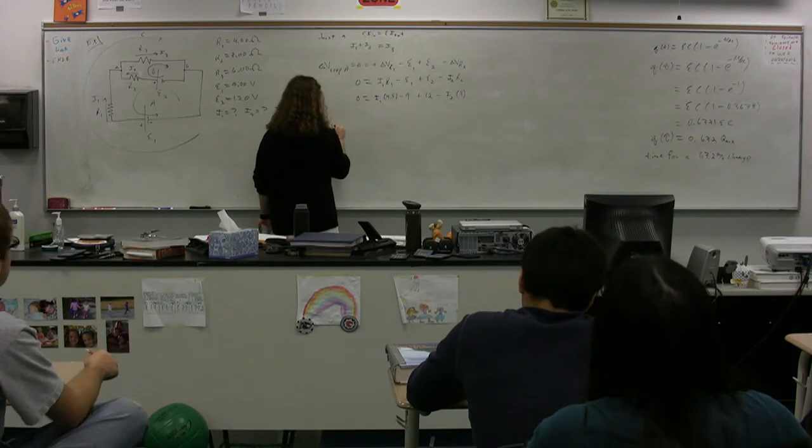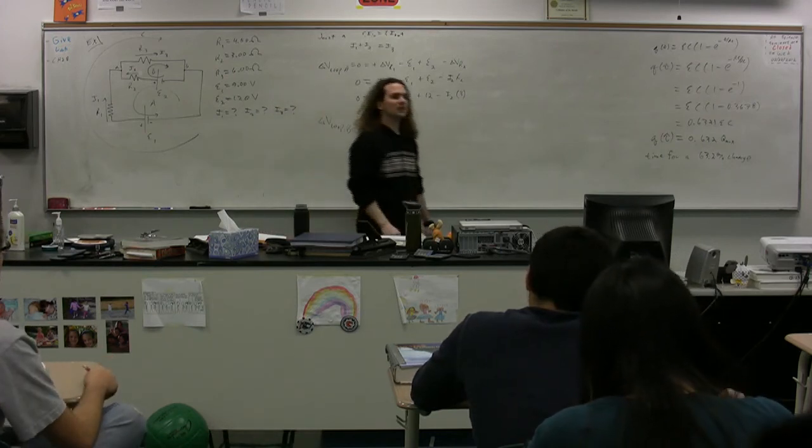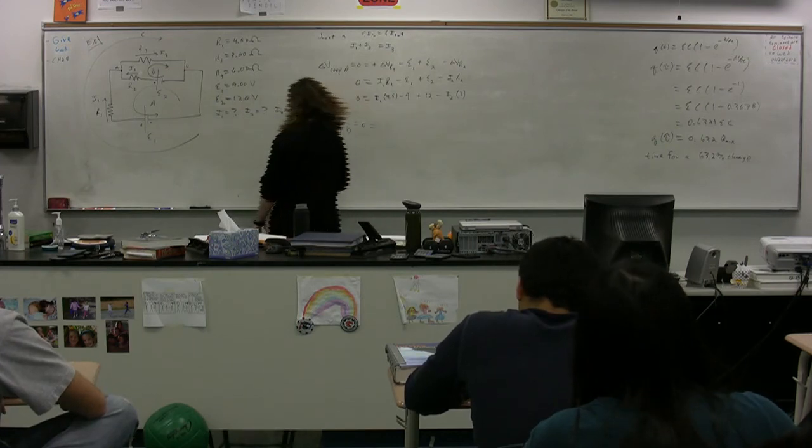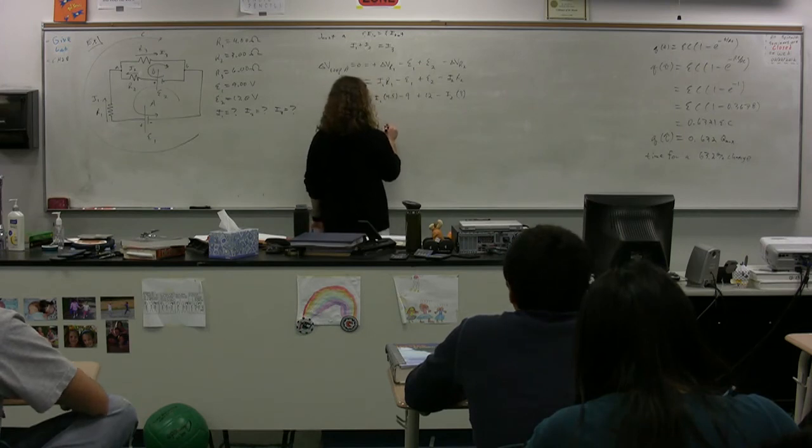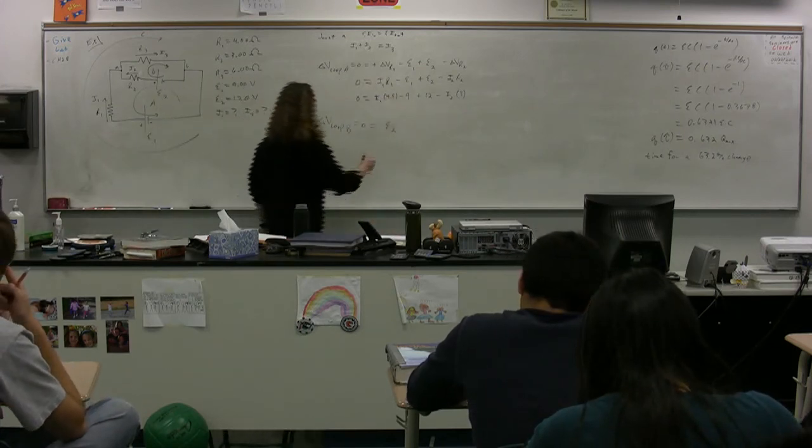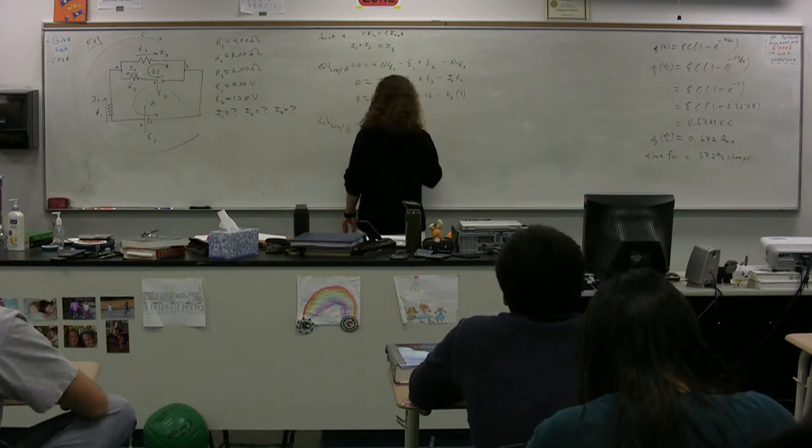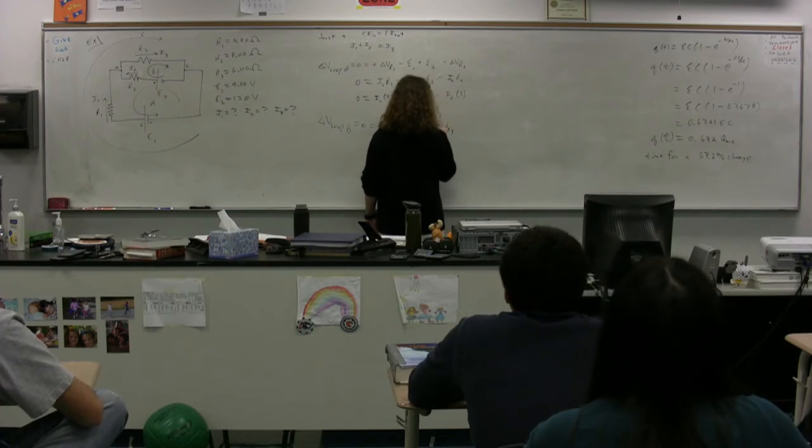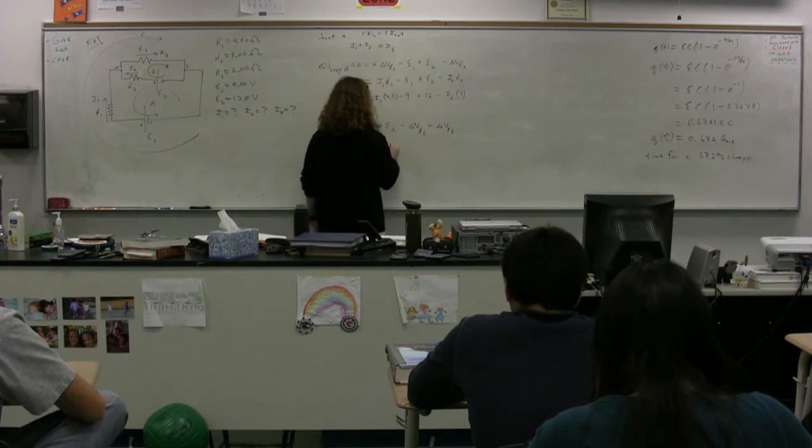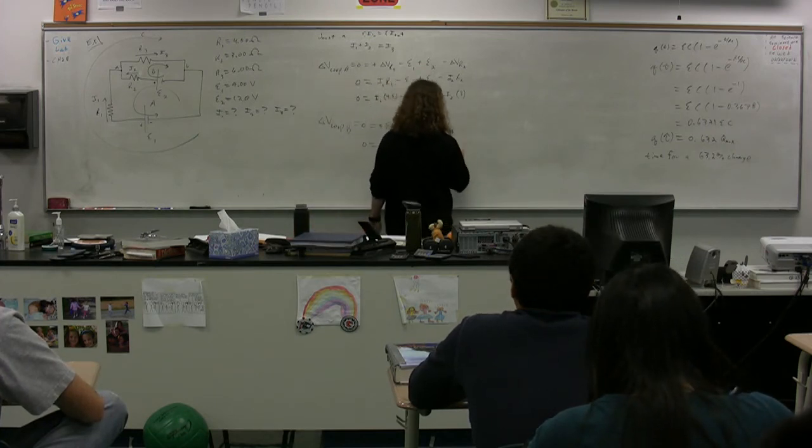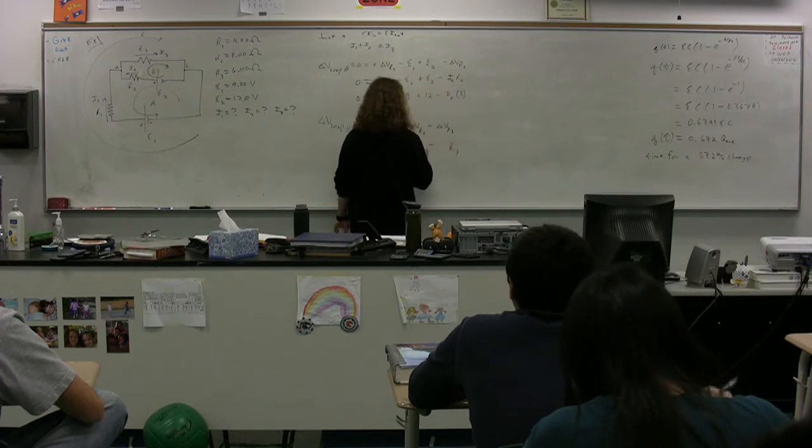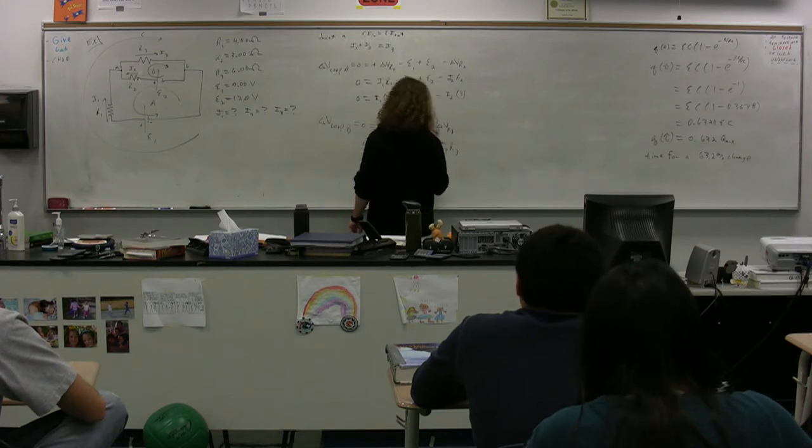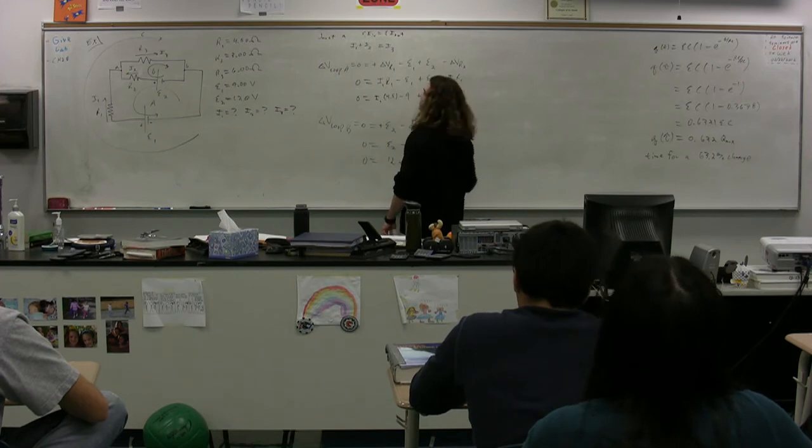We need the potential difference across loop B, which is equal to 0. It's going to be equal to... Bill, walk me through this one, please. So it's equal to 0. Loop B? You have the EMF 2, and that's going to be positive. And then you have the potential difference of resistor 2, and that's going to be negative. And then you have the potential difference of resistor 3, and that's going to be negative. Good. 0 equals EMF 2... Megan did such a wonderful job the first time. What currents are going through resistors 2 and 3? 2 and 3. So we have 0 equals EMF 2, which is 12, minus current 2, which we're solving for, times resistance 2, which is 3, minus current 3, which we're solving for, times resistance 3, which is 6.